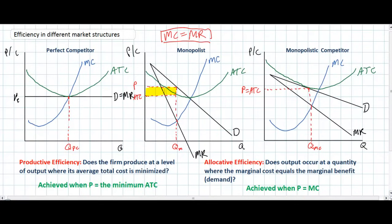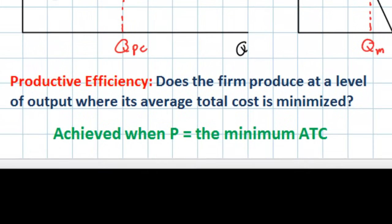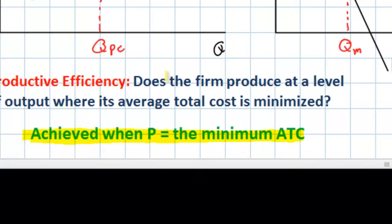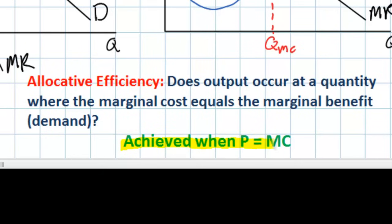Now we're ready to analyze the degree of efficiency in each market. For productive efficiency, we ask whether price equals the firm's minimum average total cost. For allocative efficiency, we look at whether price equals marginal cost — since if price exceeds MC, marginal benefit is greater than marginal cost and resources are under-allocated toward the good, which is a form of market failure.